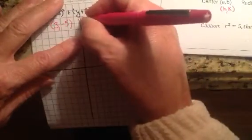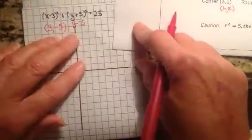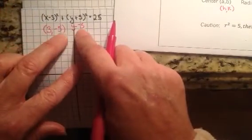So this could be rewritten as y minus negative 5, right? I could put two negatives together there. And that's how I came up with the negative 5.